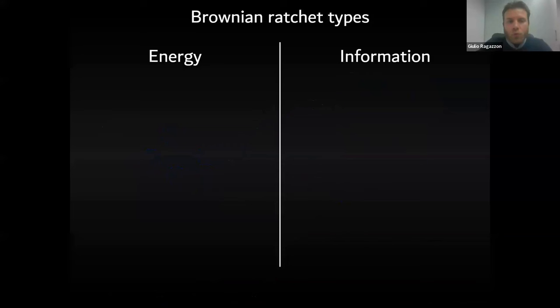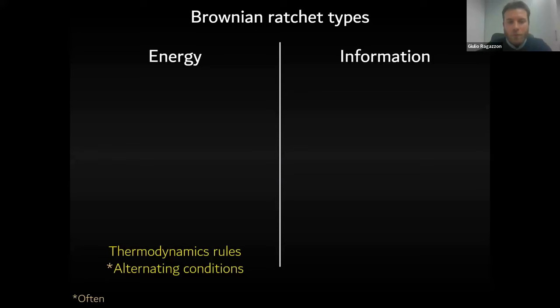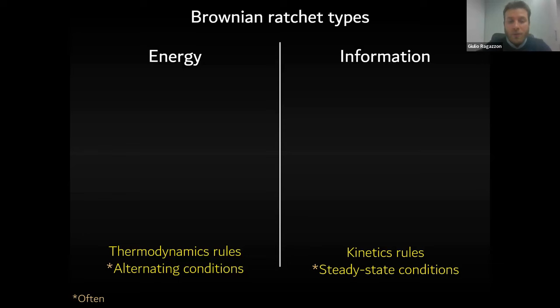In general, there are two families of molecular ratchets: energy ratchets and information ratchets. As a rule of thumb, in energy ratchets, thermodynamics rules, and in most cases this implies alternating conditions. In the case of an information ratchet mechanism, it is kinetics which rules. The distinction is quite significant: in energy ratchets it's the stability of intermediates that matters, whereas in information ratchets it's the energy of transition states which rules. We'll describe one example of each, starting from energy ratchets.